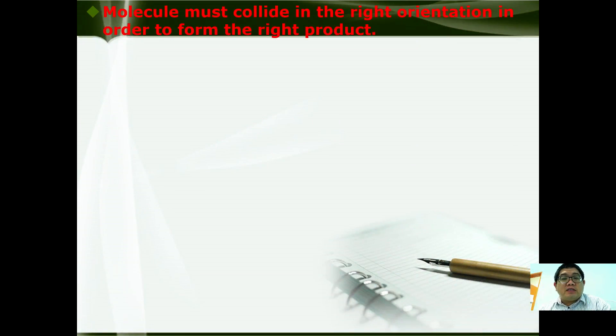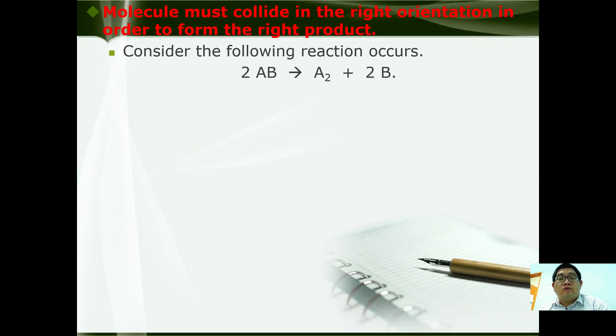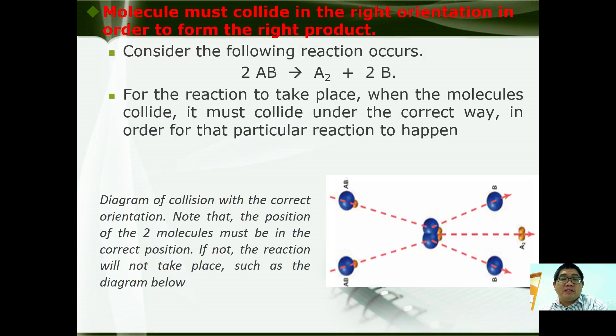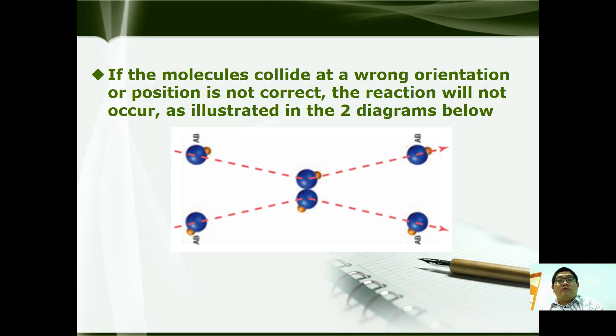The second postulate is molecules must collide in the right orientation in order to react and form the right products. Consider the following reaction where 2AB gives A2 + 2B. For the reaction to take place when molecules collide, it must collide in the right correct way in order for that particular reaction to happen. For example, between A and B, they must collide correctly in order to form A2. If the molecules collide in the wrong way or wrong orientation, its position is not correct and the reaction may not occur as illustrated in the diagram below.